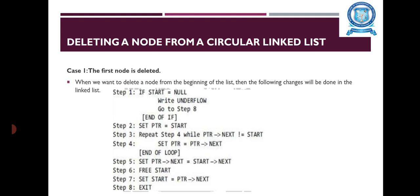However, if there are nodes in the linked list, then we use the pointer variable which will be used to traverse the list to ultimately reach the last node. In step 5, we change the next pointer of the last node to point to the second node of the circular linked list. In step 6, the memory occupied by the first node is freed.